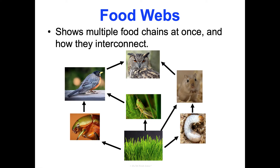A food web shows multiple food chains at once and how they interconnect. Different things can eat different things — they don't only eat one thing. Look at this mouse: it has two arrows going into it showing it eats two different sources — both grass and larvae. It only gets eaten by the owl. We can look at these maps to depict different food relationships and consumer relationships.